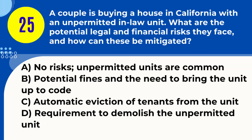Question 25. A couple is buying a house in California with an unpermitted in-law unit. What are the potential legal and financial risks they face, and how can these be mitigated? A. No risks; unpermitted units are common. B. Potential fines and the need to bring the unit up to code. C. Automatic eviction of tenants from the unit. D. Requirement to demolish the unpermitted unit. Answer: B. Potential fines and the need to bring the unit up to code. Explanation: Buying a property with an unpermitted unit in California carries risks like potential fines, and the need to obtain permits and ensure the unit meets code requirements.